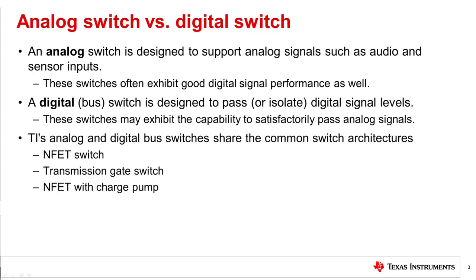An analog switch is designed to support analog signals such as audio and sensor inputs, and these switches often exhibit good digital signal performance as well. A digital or bus switch is designed to pass or isolate digital signal levels, and may also satisfactorily pass analog signals. TI's analog and digital bus switches and multiplexers are electrically equivalent and share common switch architectures found in the semiconductor industry.